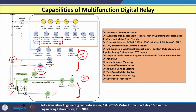Along with this, a current unbalance relay function is available, locked rotor protection function is available, load jam function is available, and a record of how many times the motor has been started per hour is also available. Additionally, undercurrent and underpower measurement, phase reversal measurement, locked rotor protection, and under and over frequency functions are also incorporated — because these are all abnormalities that can occur in the induction motor.